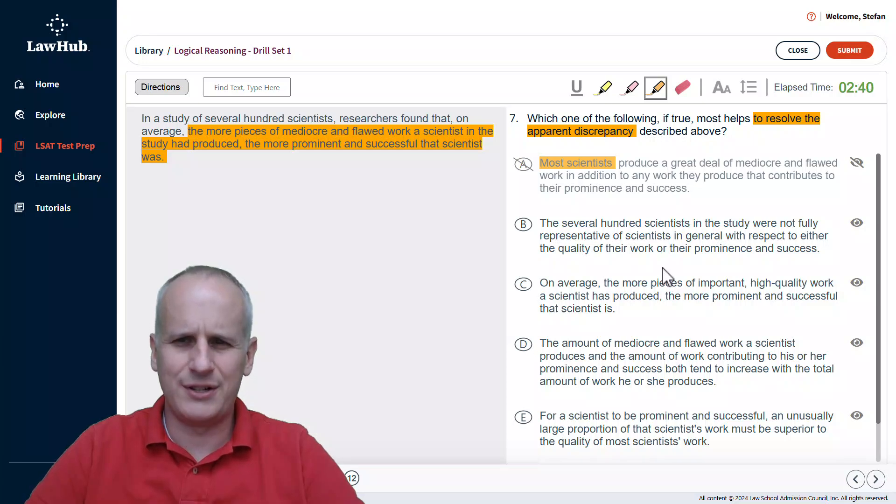Next, choice B, the several hundred scientists in the study were not fully representative of scientists in general. Well, this is one of those instances where I may not even read further because I know that the discrepancy, the paradoxical information, is limited to this study. It's not being applied to scientists in general, so we can eliminate choice B pretty briskly.